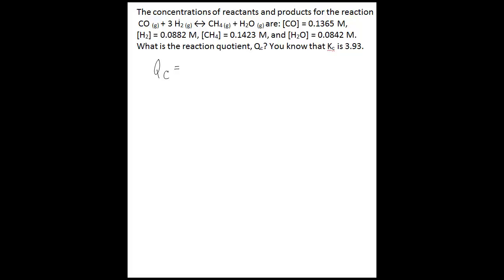For this problem, we're given the concentrations of reactants and products for the reaction where carbon monoxide is reacting with hydrogen gas to give us methane gas and water as a gas, and the concentrations that we're given are shown here. We want to know what QC is. QC is products over reactants, so it's going to be the methane gas concentration multiplied by the concentration of water as a gas, divided by the concentration of carbon monoxide gas multiplied by the concentration of hydrogen gas raised to the third power.